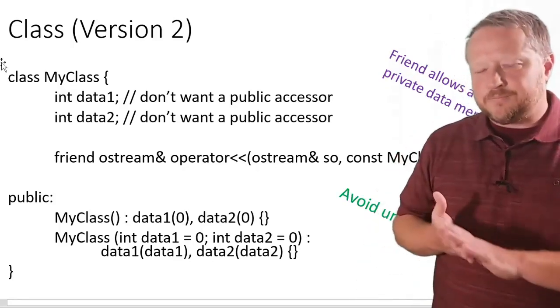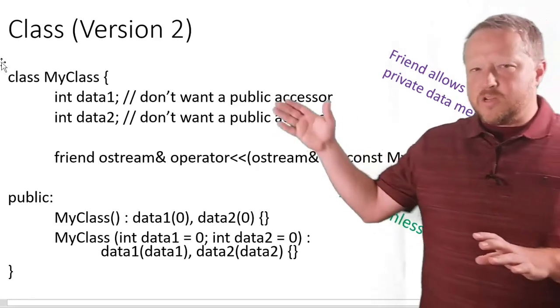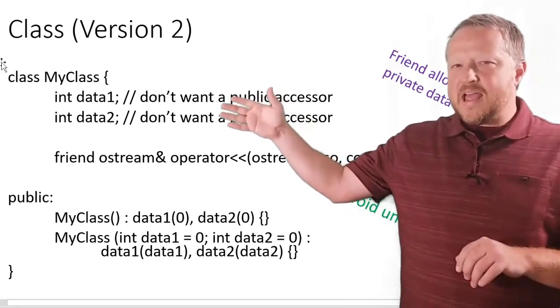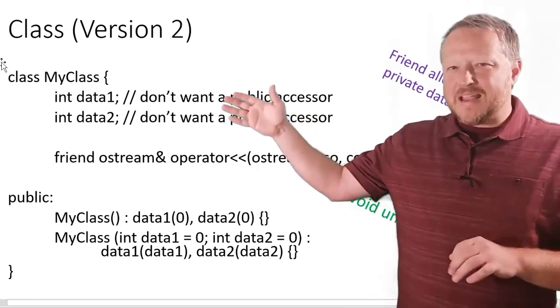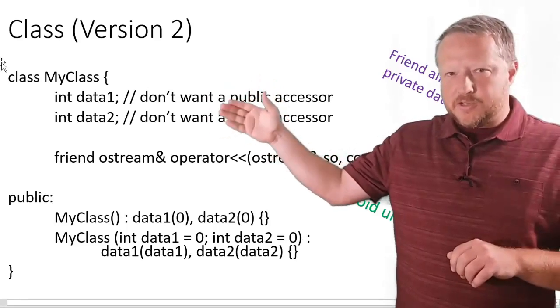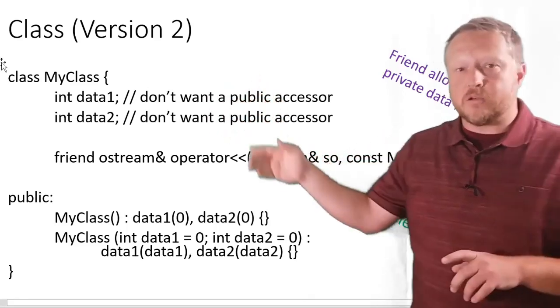So there's a design dilemma. What if we really don't want to have public access to data one and data two, and you're looking at me, wait a minute, that's supposed to be private. You're right.